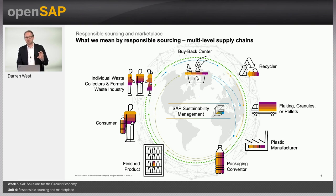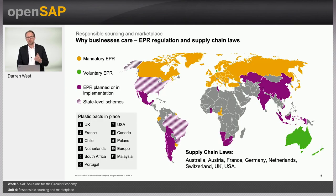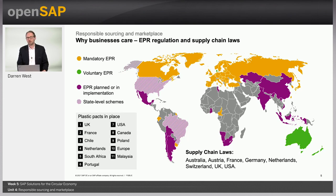SAP technology is able to link all of them together in a business network. Why do businesses care about responsible sourcing? Civil society and businesses themselves are increasingly asking whether it is ethical to make a profit on the back of environmental and social harm. Businesses care because their investors, consumers, and employees care and are willing to challenge them if they are not acting in sustainable ways.